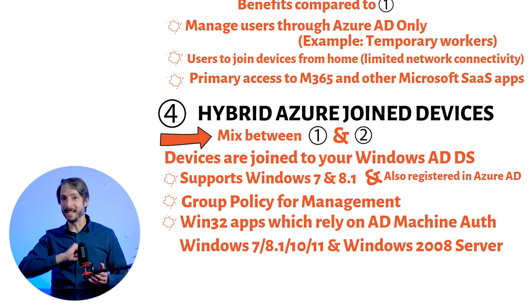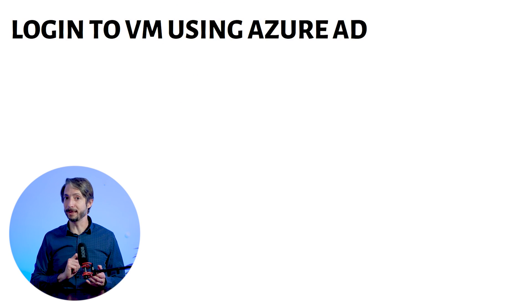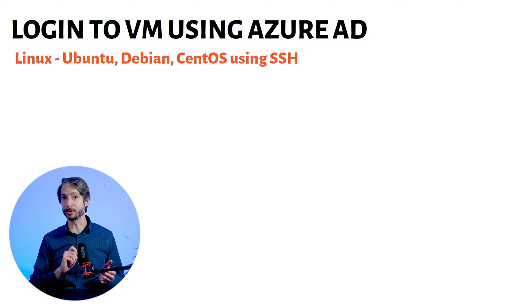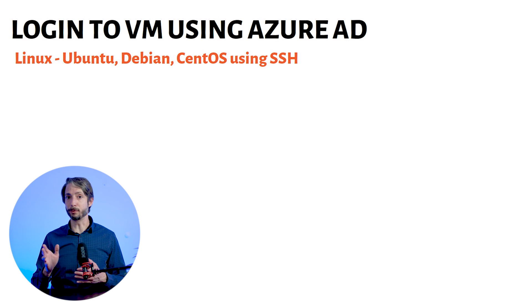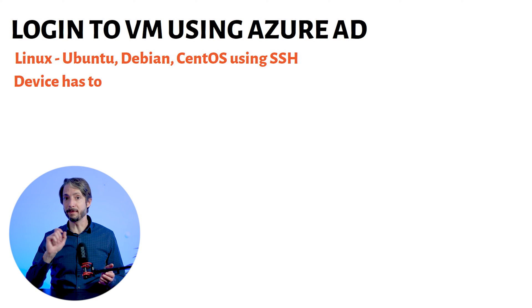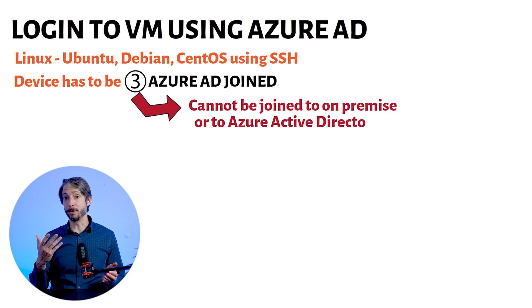Now let's check what the possibilities are to log into a VM in Azure using Azure AD. It's also possible to use Linux distributions such as Ubuntu, Debian, CentOS and many more for Azure AD authentication using SSH. However, I will focus on Windows here, but the concepts are very similar between the two. Once you enable virtual machine logins using Azure Active Directory, the device will have to be Azure AD joined. You cannot join it to any other domain or an on-premise Active Directory domain at the moment of recording.